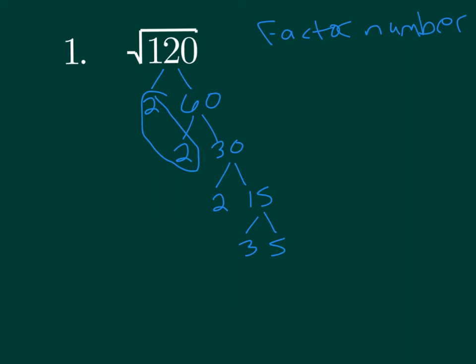So my one pair right here, that's going to be a number that I put in front of a square root. So I'm going to have 2 in front of a square root. Again, this 2 right here came from a pair.